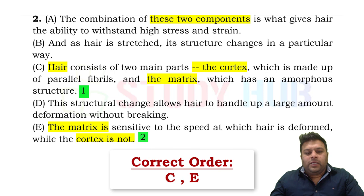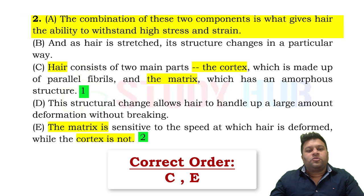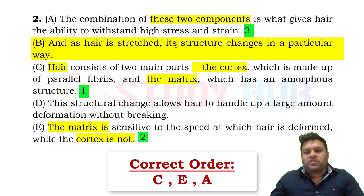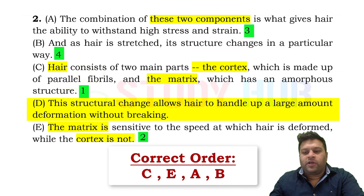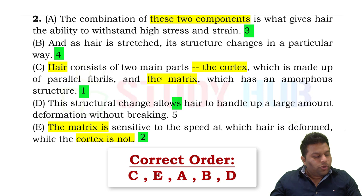The second sentence is not A — it has to be E: 'the matrix is sensitive to the speed at which hair is deformed, while the cortex is not.' E is still explaining matrix and cortex before talking about their combination. Then A comes third: 'the combination of these two components is what gives hair the ability to withstand high stress and strain.' Then 'as hair is stretched its structure changes in a particular way' is fourth, and 'this structural change allows hair to handle a large amount of deformation without breaking' is fifth.